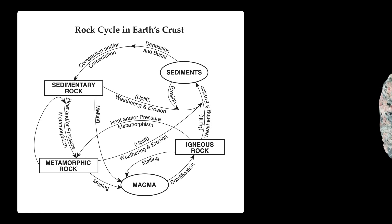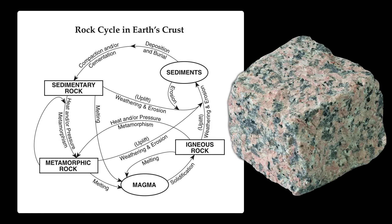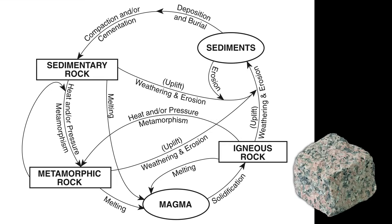Let's go through a quick example. Here is a chunk of an igneous rock known as granite. You can see it's made up of intergrown crystals of potassium feldspar, quartz, and biotite, and that's what gives it its speckled look. Granite is an igneous rock, which forms from the solidification of melted material — magma or lava. Granite happens to form deep underground from the slow cooling of magma. But the question we want to look at now is: what can happen to this igneous rock over time?